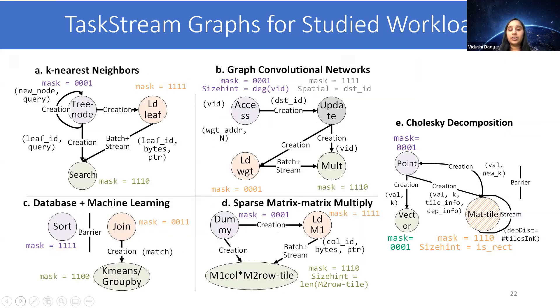We explored structure recovery across a wide range of workloads using a novel program representation. Pure streaming was useful for Cholesky, while batch plus stream is extremely useful for k-nearest neighbors and sparse matrix multiply. SizeHint is beneficial for graph convolution networks where the vertices may require varying amounts of work.